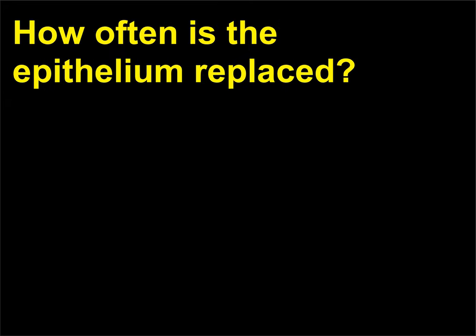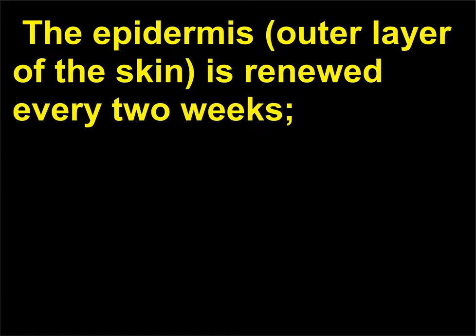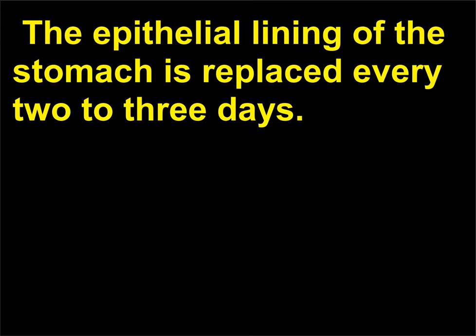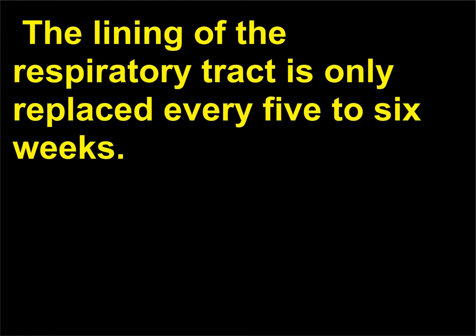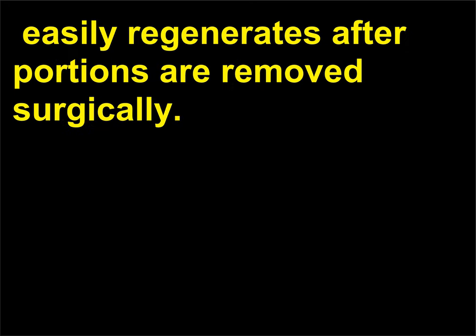How often is the epithelium replaced? Epithelial cells are constantly being replaced and regenerated during an individual's lifetime. The epidermis, or outer layer of the skin, is renewed every two weeks, and a totally new epidermis is produced every 25 to 30 days. The epithelial lining of the stomach is replaced every two to three days. The lining of the respiratory tract is only replaced every five to six weeks. The liver, a gland consisting of epithelial tissue, easily regenerates after portions are removed surgically.